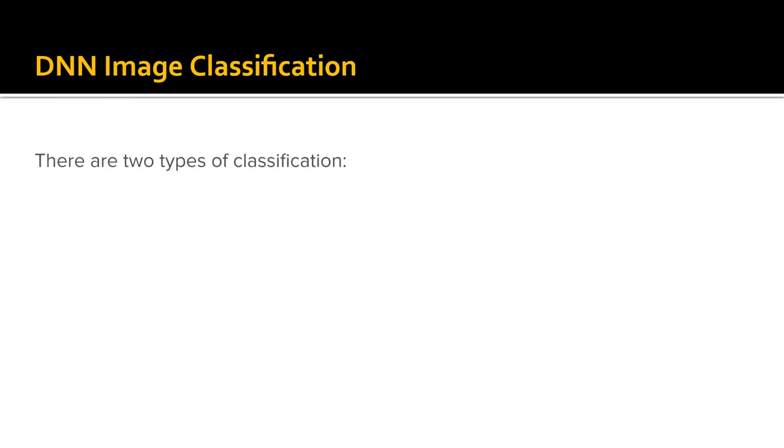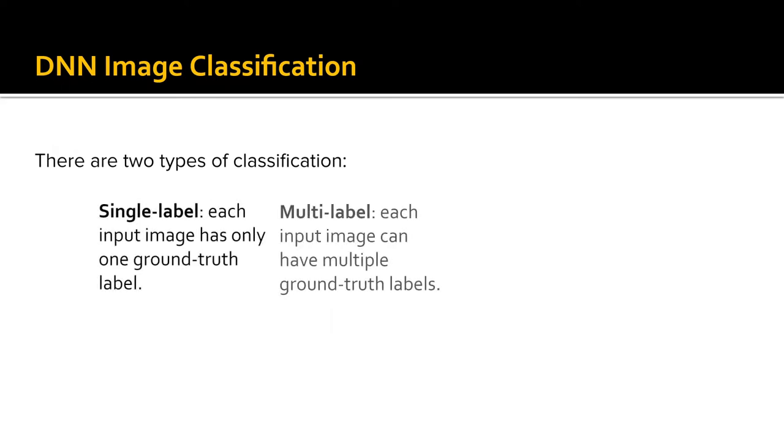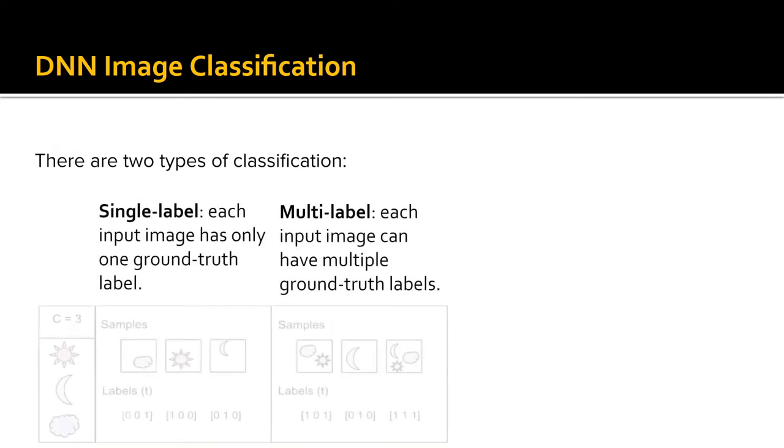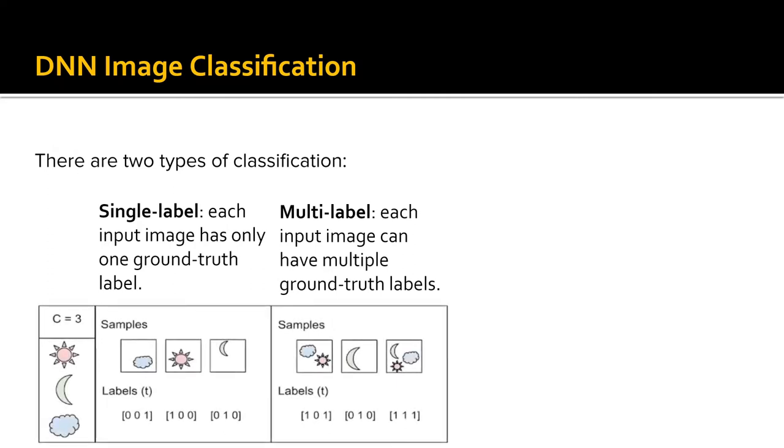There are two types of classification: single-label classification and multi-label classification. The difference is shown in this image. As you can see on the left, for single-label image classification, you can only have one ground-truth label. In this example, it is cloud, sun, or moon. But as you can see on the right, for multi-label image classification, you can have more than one of such objects as the ground-truth labels.